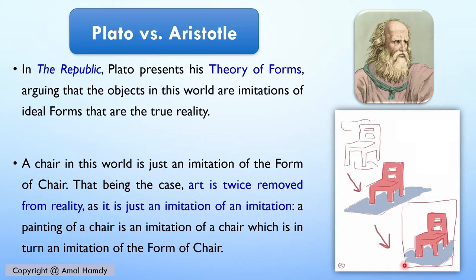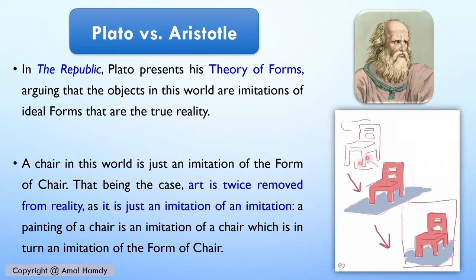So when a painter paints a painting of a chair, he is imitating the chair in the real world, and the chair in the real world is an imitation of the form of the chair in the ideal world of forms. According to Plato, art — whether painting, literature, or any other kind — is an imitation of an imitation, because the real world itself is an imitation.